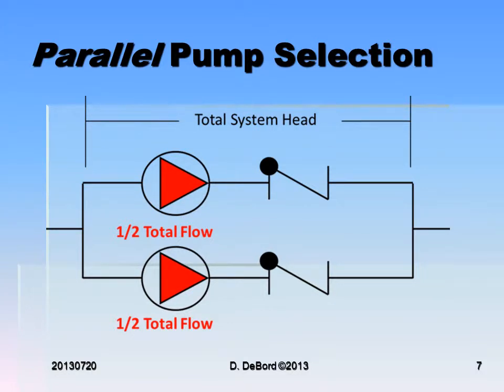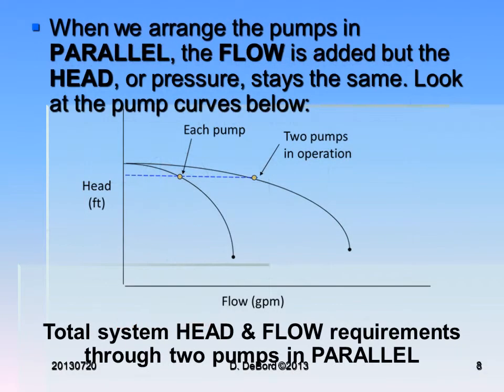Parallel pump selection looks like this. We see the total system head, but half the flow is through one pump and half the flow is through the other pump. When we arrange the pumps in parallel, the flow is added but the head or pressure stays the same. Each pump curve shows about half the GPM of the total of the two, but the head is the same whether you have one or two pumps in operation. So with two pumps operating in parallel, the flow is multiplied but the head is the same.